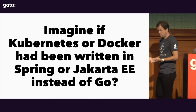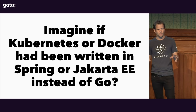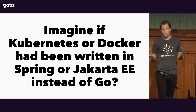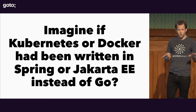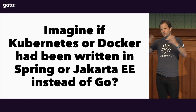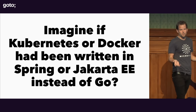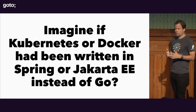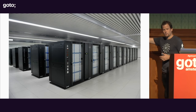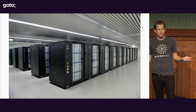I always ask this question: imagine if Kubernetes or Docker, which all of us run locally, were written with Spring or Jakarta EE. Both of these systems are a suite of microservices — there are maybe 20, 30, 40 of them. Imagine running 20 to 40 Java processes locally. Every single one of us would need a massive laptop because the memory consumption requirements would be insane. This is why a lot of people go to things like Go.